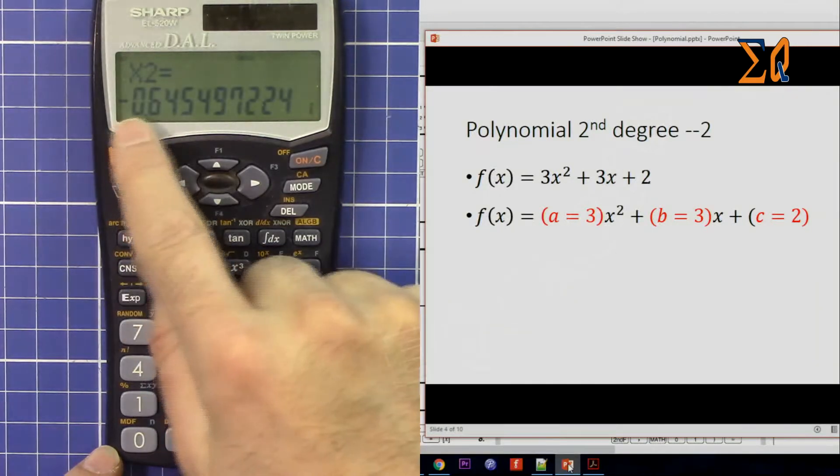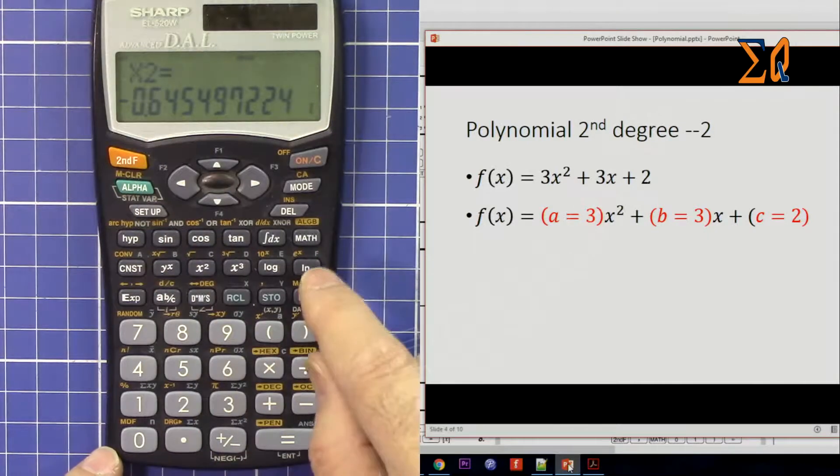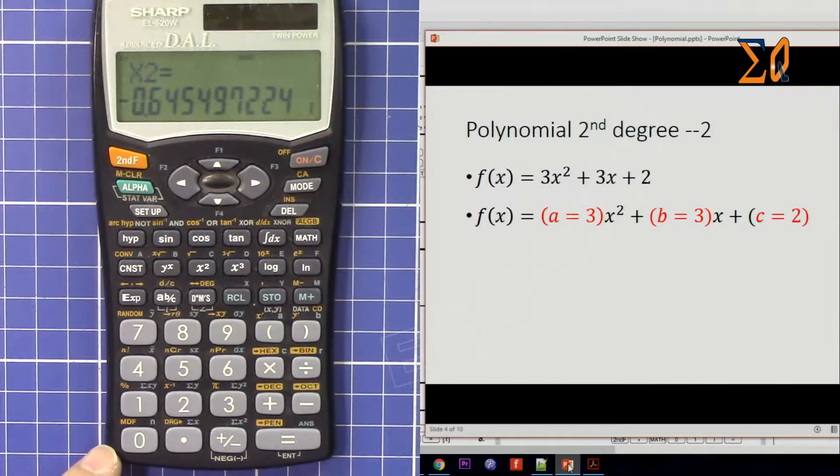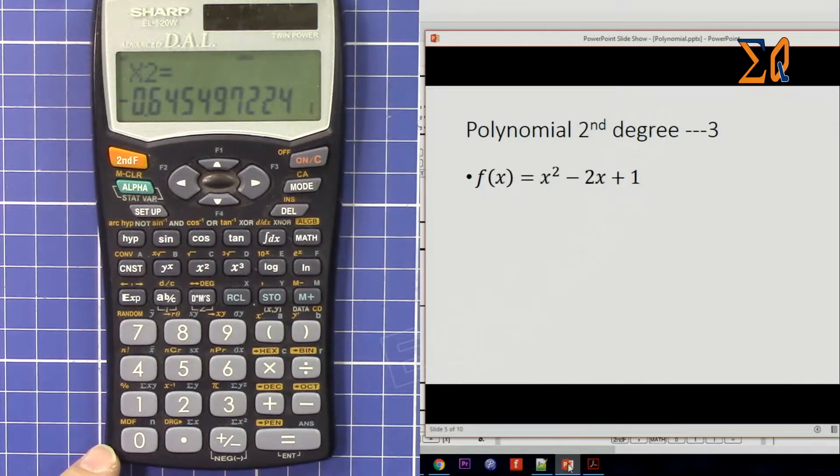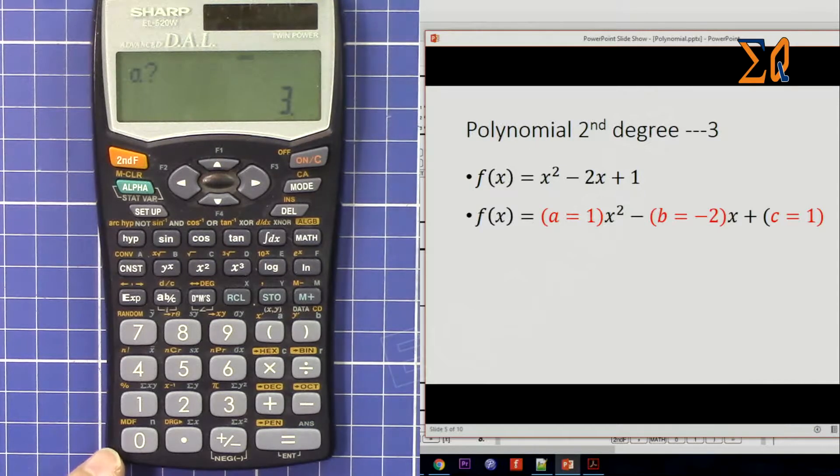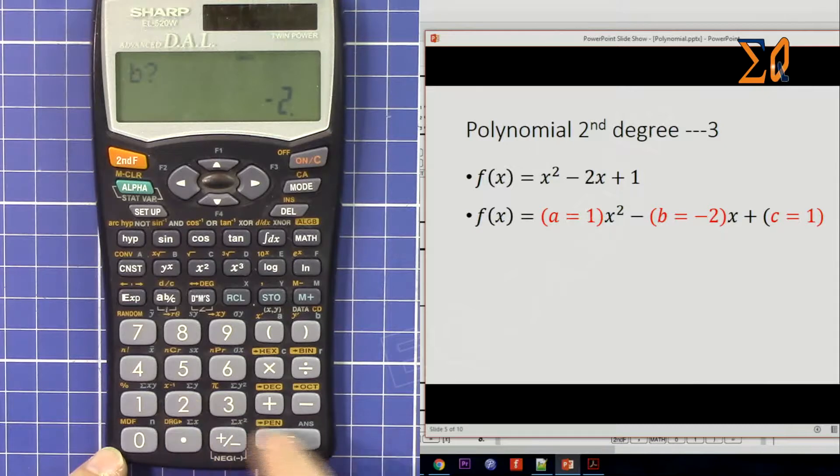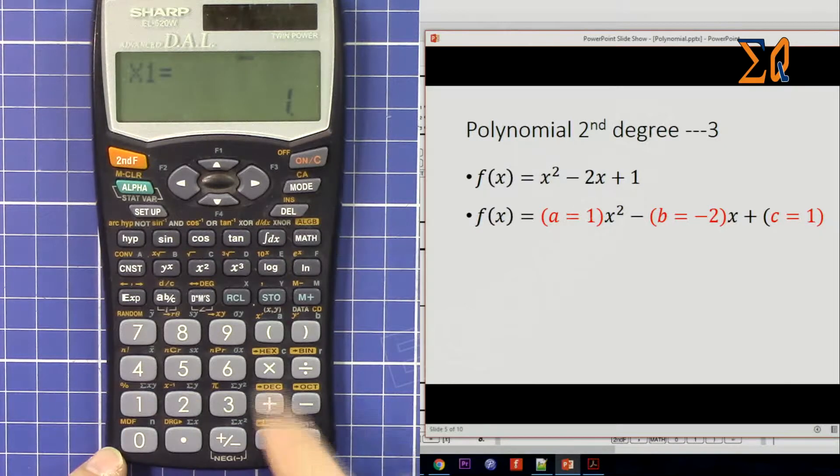Now let's do this one: x² - 2x + 1. So the coefficient is 1, -2, and 1.